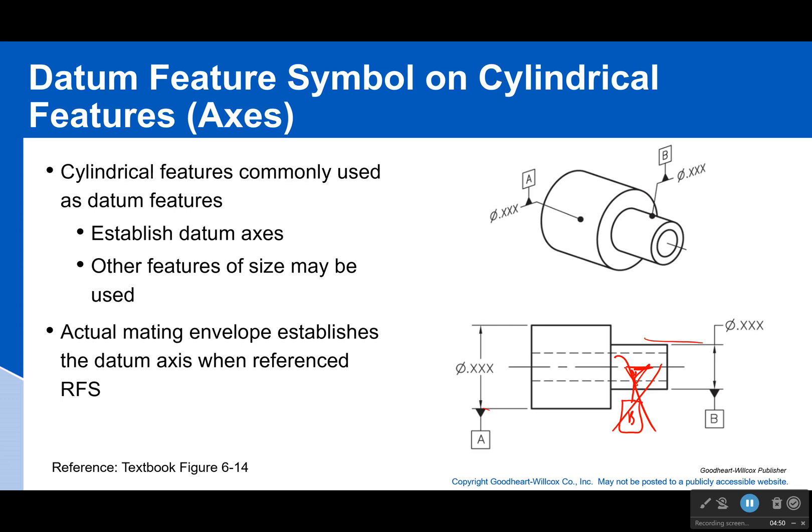No, you attach it either to an extension line from the surface or directly to the surface. And there's this term right here - the actual mating envelope - which is simply saying just like I had that true geometric counterpart for my ziggity zaggity surface, similarly my cylinder is not going to be perfect. It's going to be kind of crazy too. Might be angled.